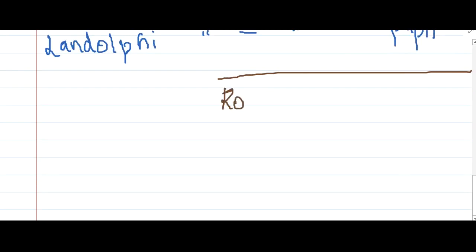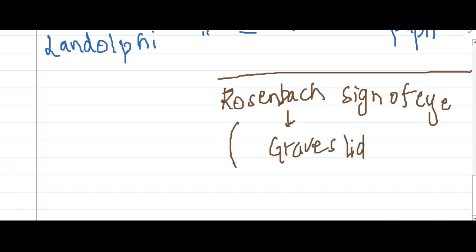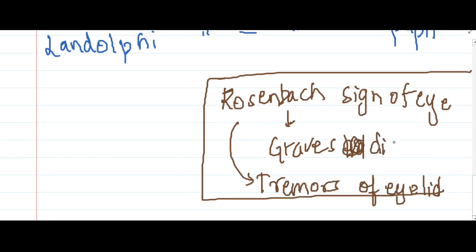There is also the Rosenbach sign of the eye, seen in Graves' disease, where tremors of the eyelid are observed. This is not pulsations but actual tremors of the eyelid, called Rosenbach sign of the eye in Graves' disease.